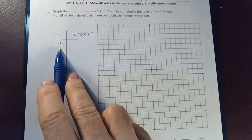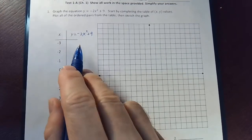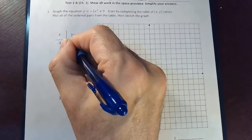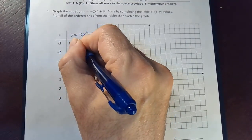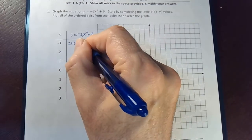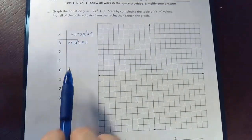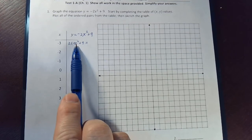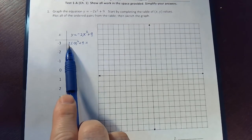So let's start at the top. Let's look at negative 3. That means that y is going to be 2 times negative 3 squared plus 9. Well, negative 3 squared is 9. 9 times 2 is 18.